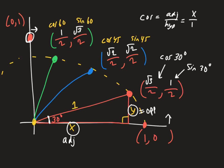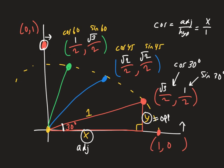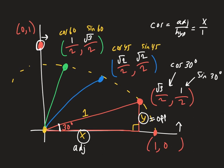Those are really the only values you need to memorize. They're going to ask questions for other angles, but they're always going to refer back to one of these because the reference angle will need to be either 30, 45, or 60 — otherwise you just have to use a calculator. And if they ever ask about tangent, remember tangent is opposite over adjacent — TOA — so the opposite is the y-coordinate and the adjacent is the x-coordinate. If you know x and y, you can find tangent.